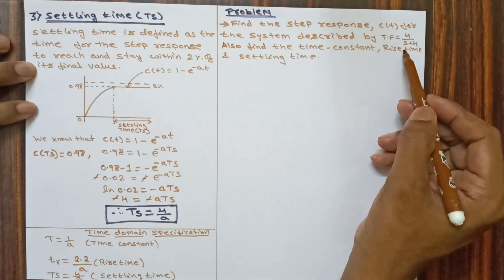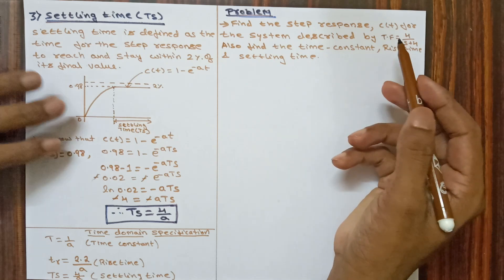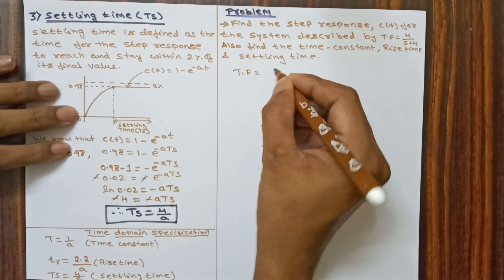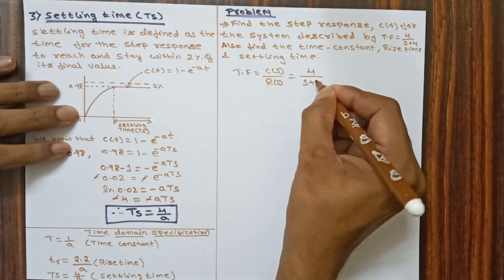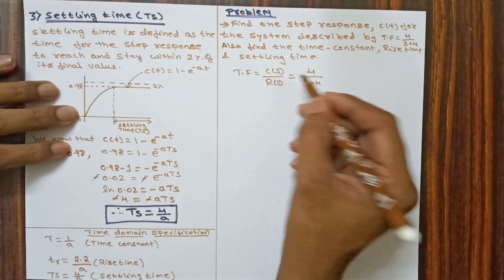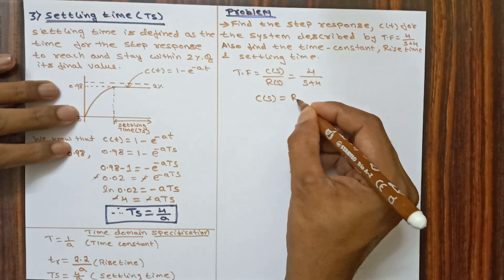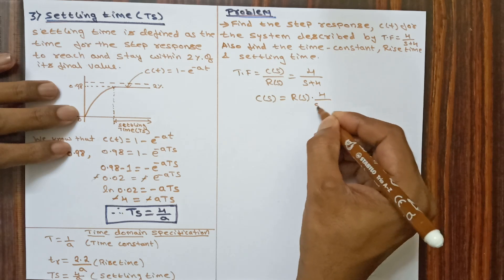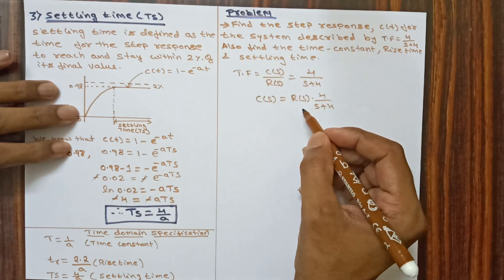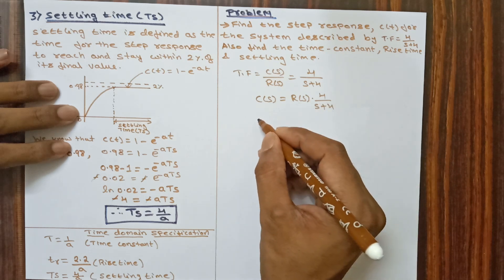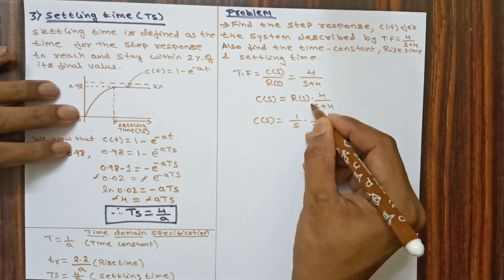Problem: Find the step response C(t) for the system with transfer function G(s) equals 4 divided by (s plus 4). Also find the time constant, rise time, and settling time. The transfer function is TF equals C(s) by R(s) equals 4 divided by (s plus 4). To find C(t), we write C(s) equals R(s) times 4 divided by (s plus 4). For step response, R(s) equals 1 by s.